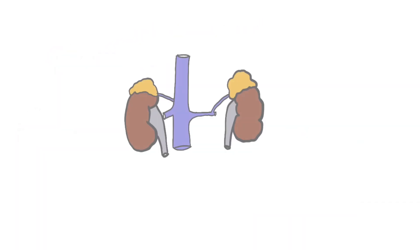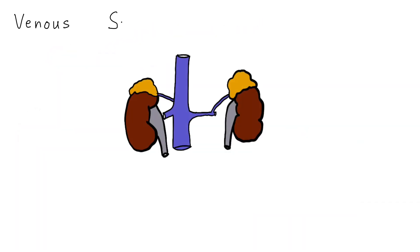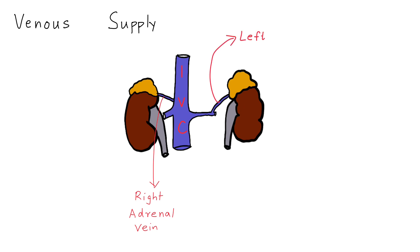The venous supply of the adrenal gland is peculiar. Usually, a single large adrenal vein drains into the inferior vena cava on the right side. On the left side, the adrenal vein drains into the renal vein.